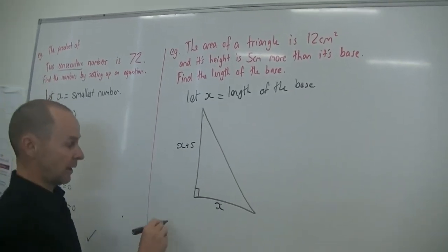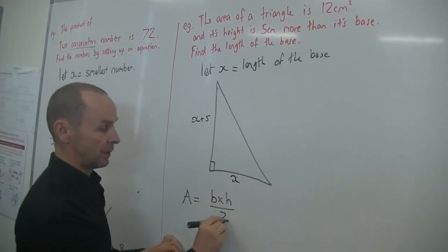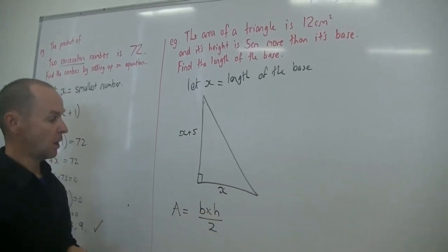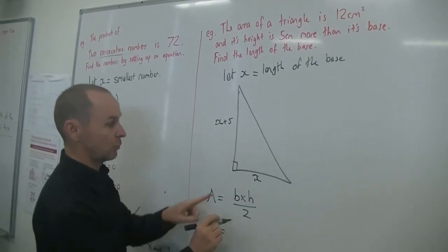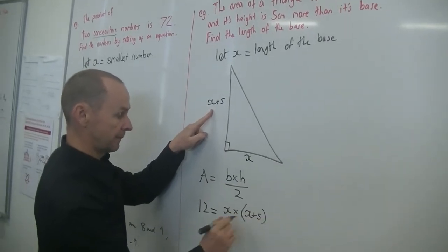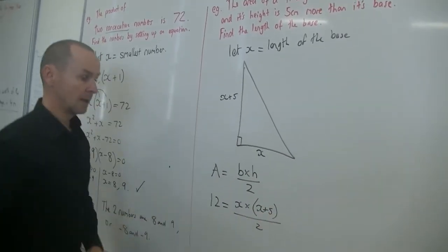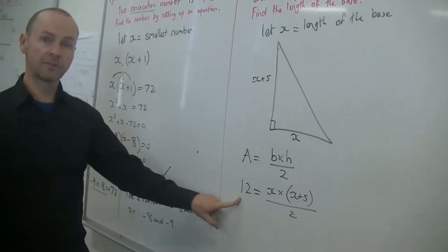All right, let's see area of a triangle. Area equals base times height divided by 2. All right, now we substitute the values in. The area is 12 equals the base is x times by the height, which is x plus 5 over 2. So there's our equation, and now all we have to do is simplify it and then solve it.